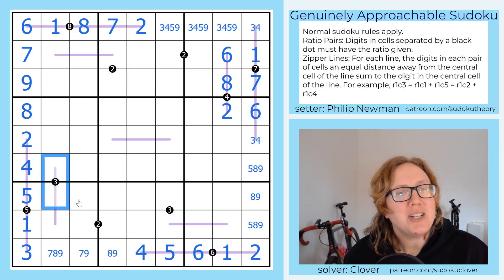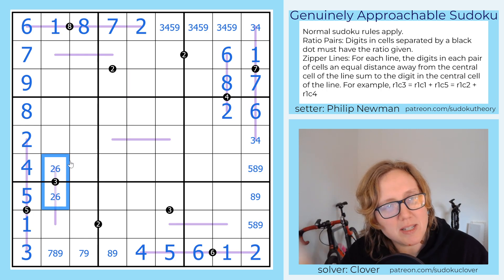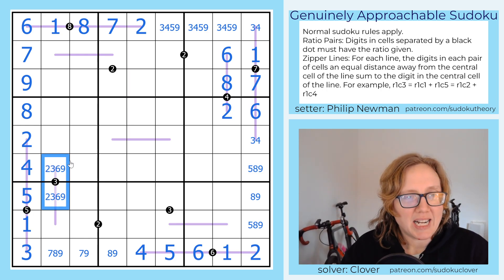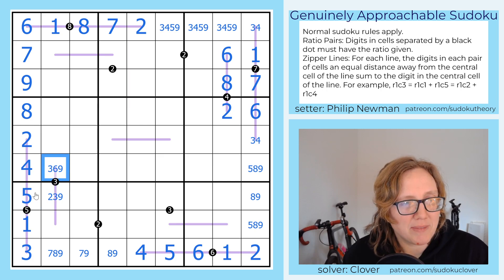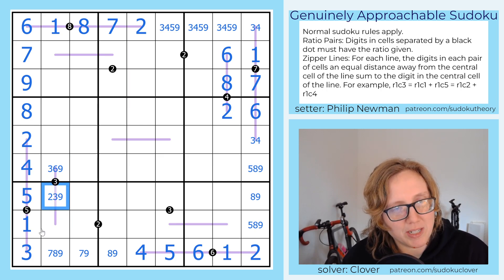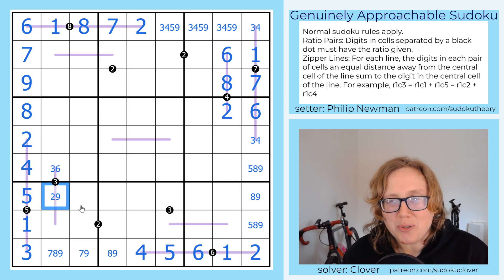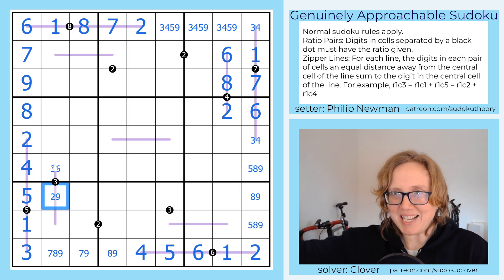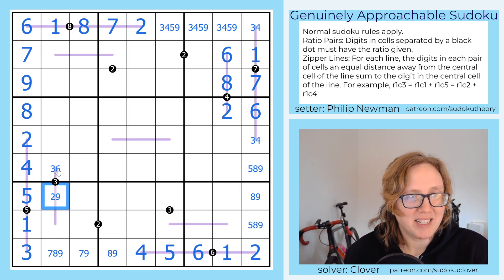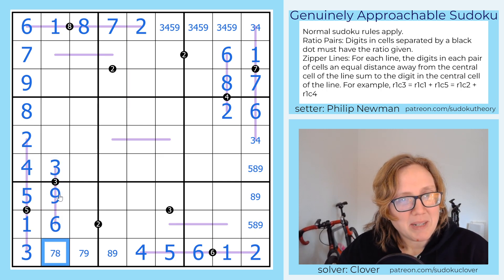Now, a ratio of 1 to 3 without a 1 unfortunately has two options, right? So it's either 2 and 6, or it's 3 and 9. Let's reduce that a little bit. So this one can't be 2, so that can't be 6. Because if this was 2, that would have to be 6 and vice versa. This can't be 3, so that can't be 9. So our two options are either 3 here and 9 here, or 6 here and 2 here. And the latter of those is impossible, because, again, zipper lines, big digit has to be in the middle, because the big digit's the sum of everything. So we've got to go 3 and 9 here, and then 6 here.